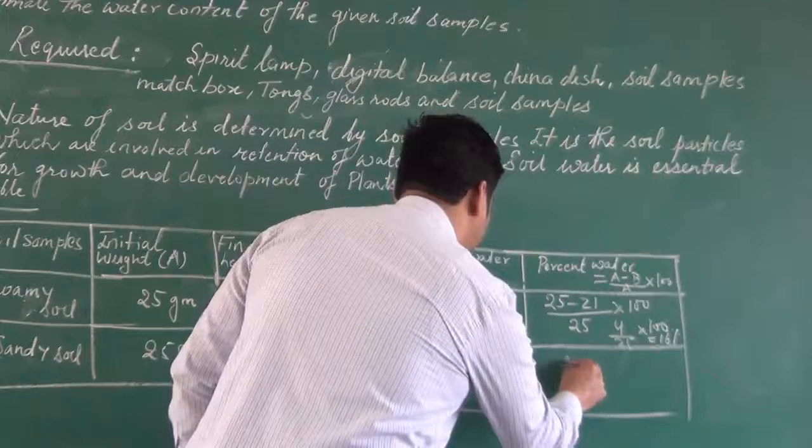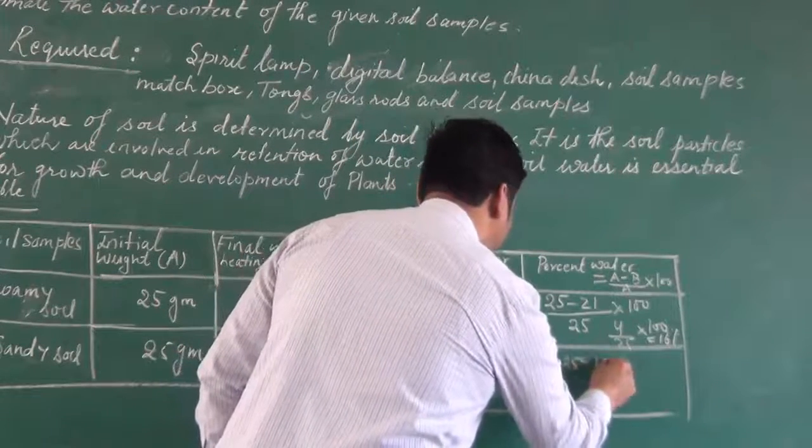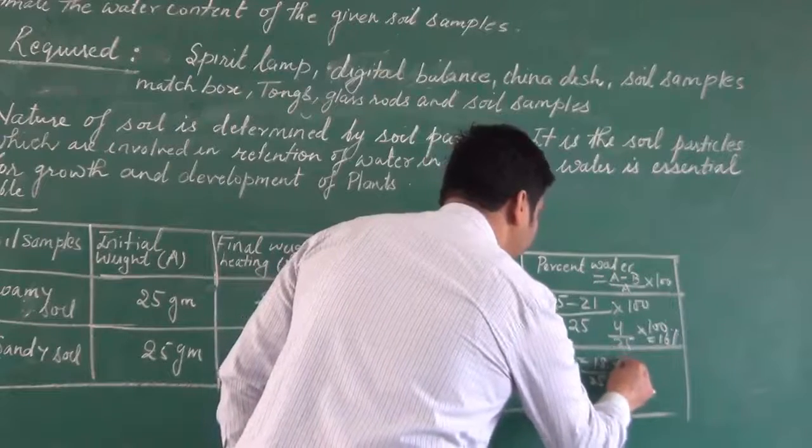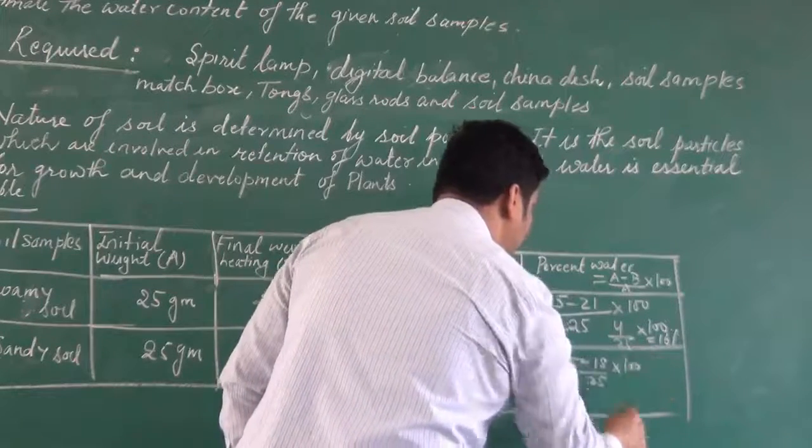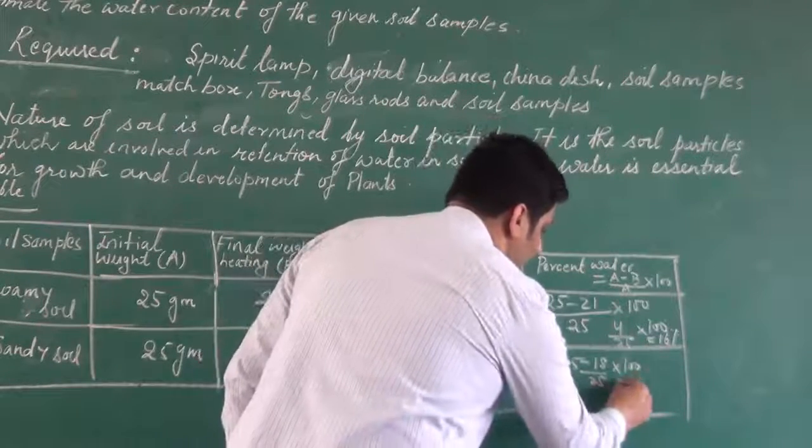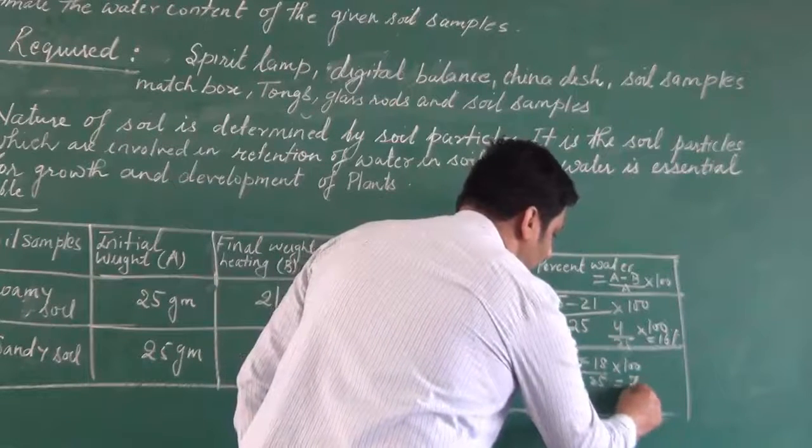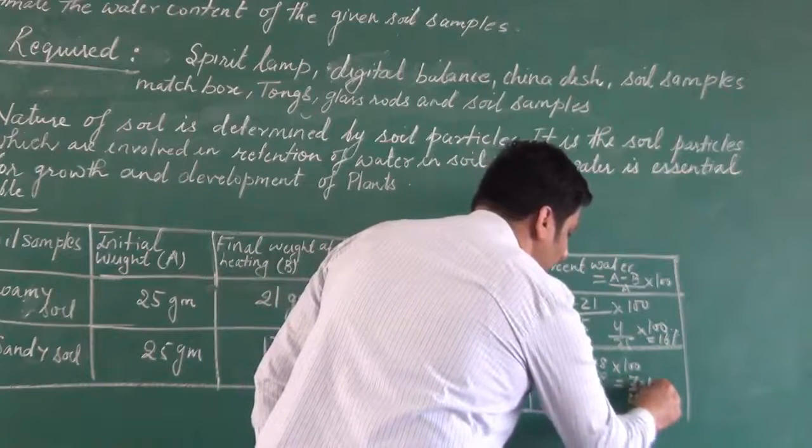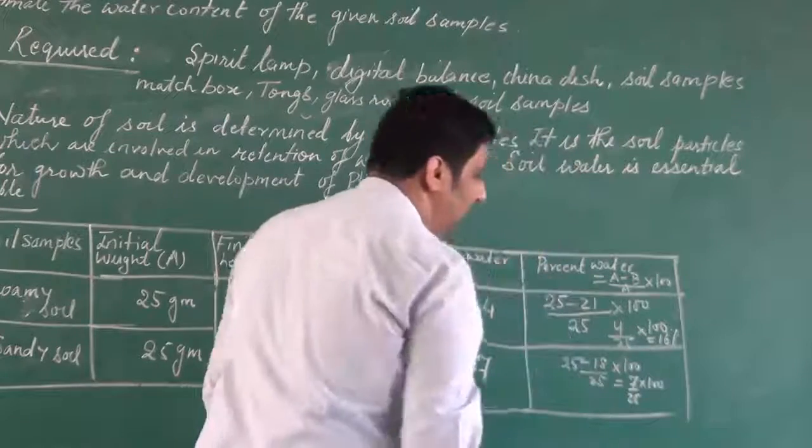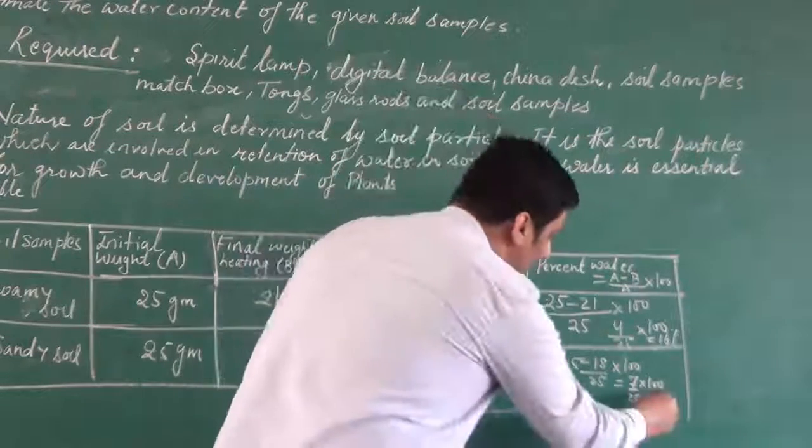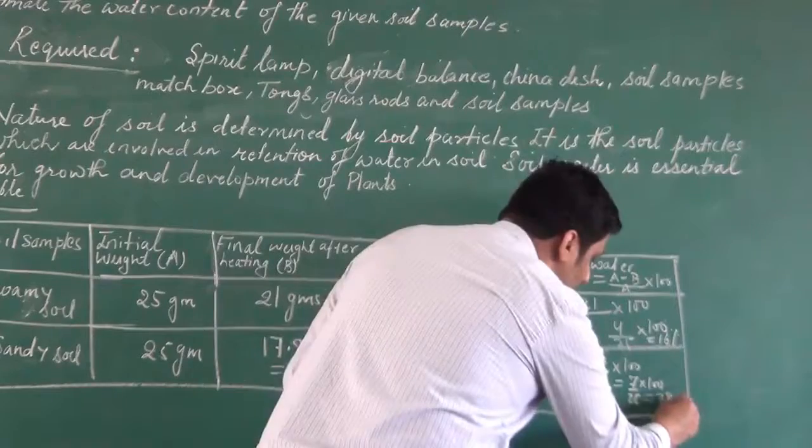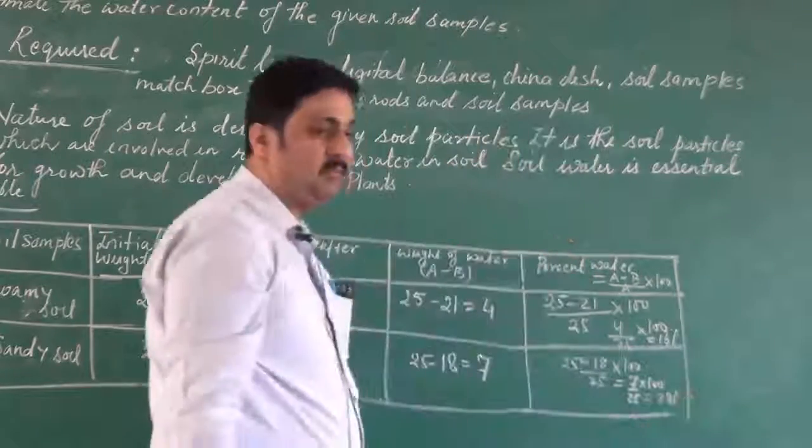Now here if you calculate, it is 25 minus 18 upon 25 into 100. 7 upon 25 into 100. So it will be something around 28 percent that was lost.